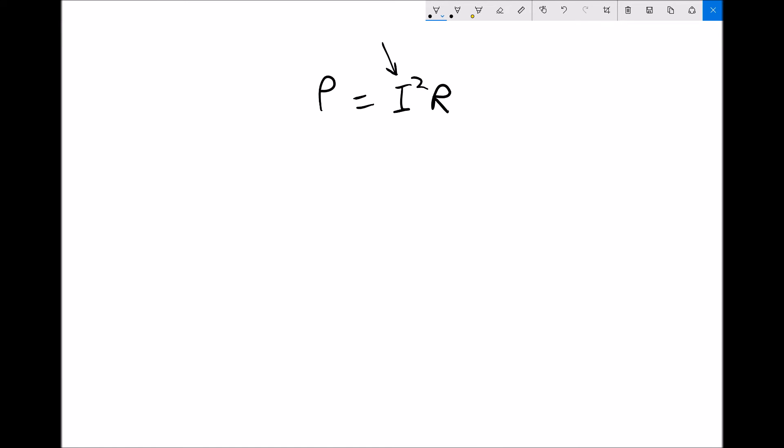Once again we've got i, but it's tied up in an expression. We've got i squared times r. So the first thing we would need to do, if we wanted to get i squared on its own, is divide each side of that equation through by r.